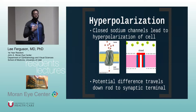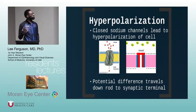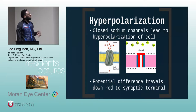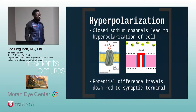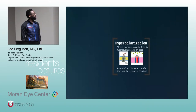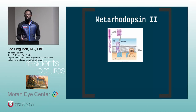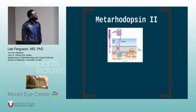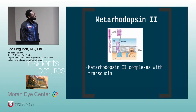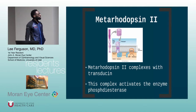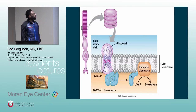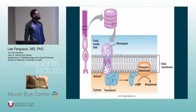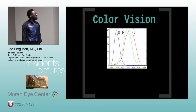Hyperpolarization is used to conduct signaling from light capture and form it into a chemo-electrical signal. What happens is closure of sodium channels leads to hyperpolarization of the cell. The potential difference travels from the rods to the bipolar cells and then to the retinal ganglion cells. Metarhodopsin 2 complexes with transducin, which then activates the enzyme phosphodiesterase.